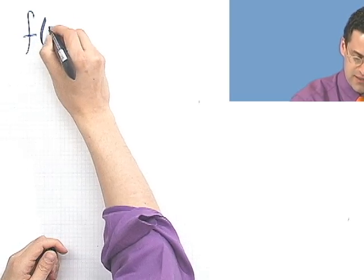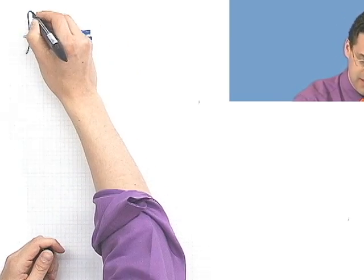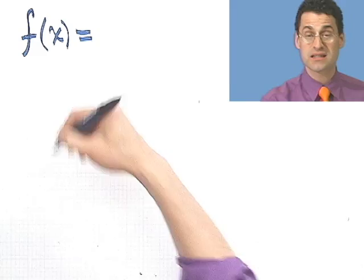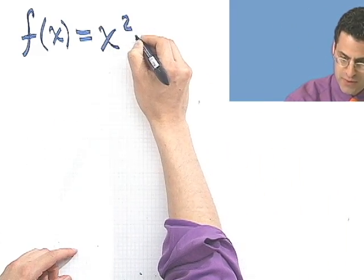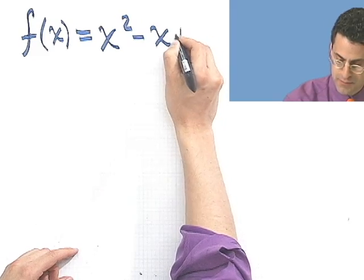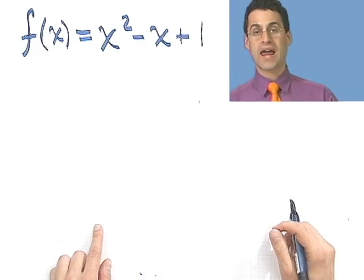Okay, so let's just start right in and take a look at f of x. That just means this is a function that depends upon x. And here's the recipe. Here's the little machine. x squared minus x plus 1. Okay, there we go.